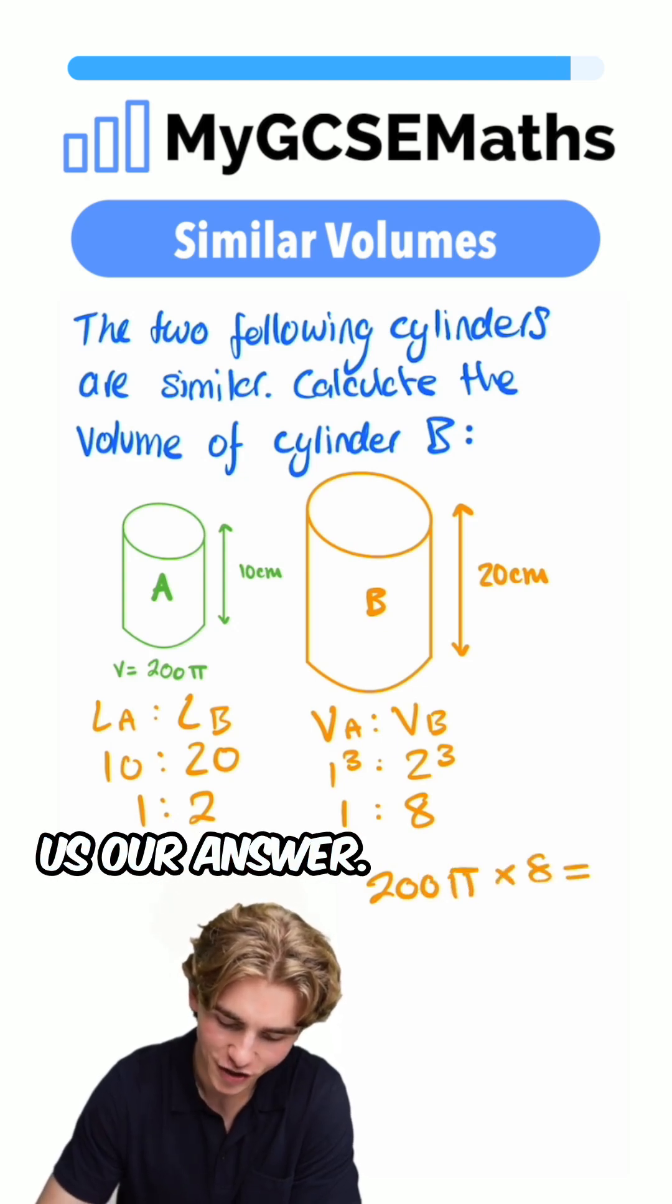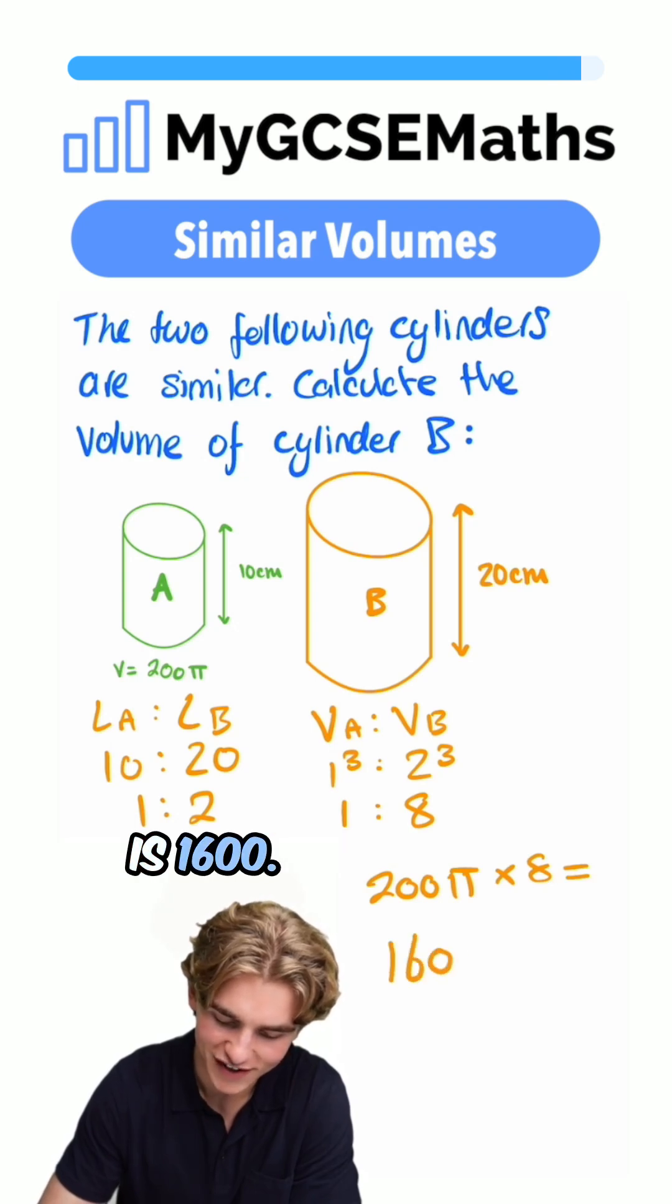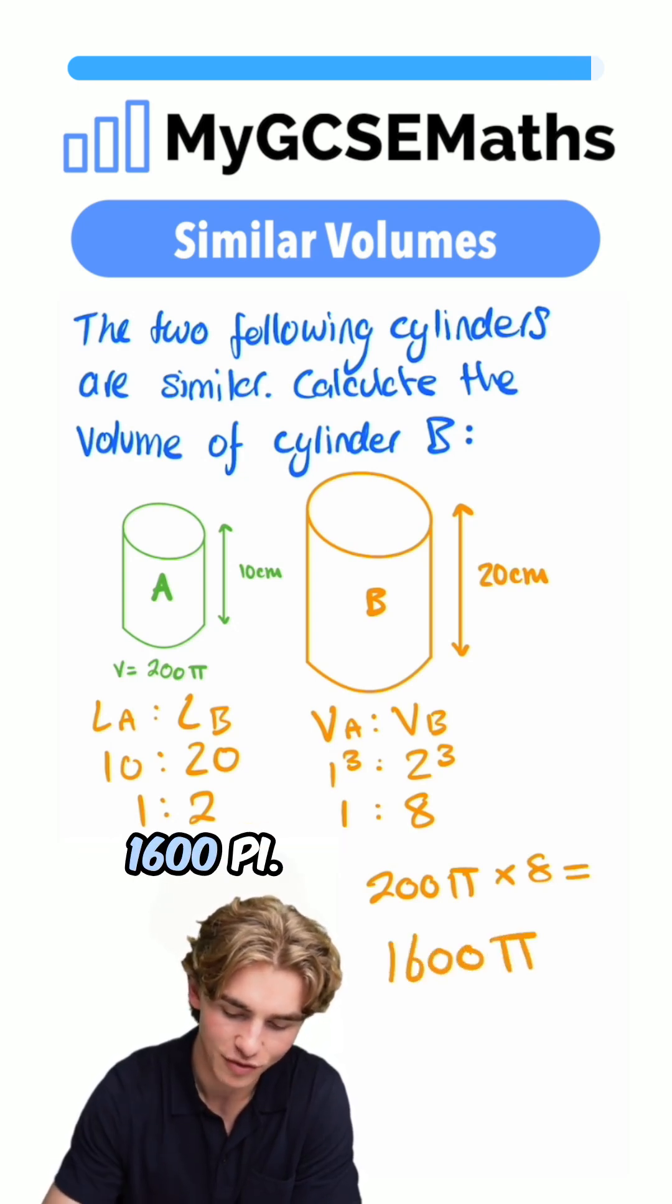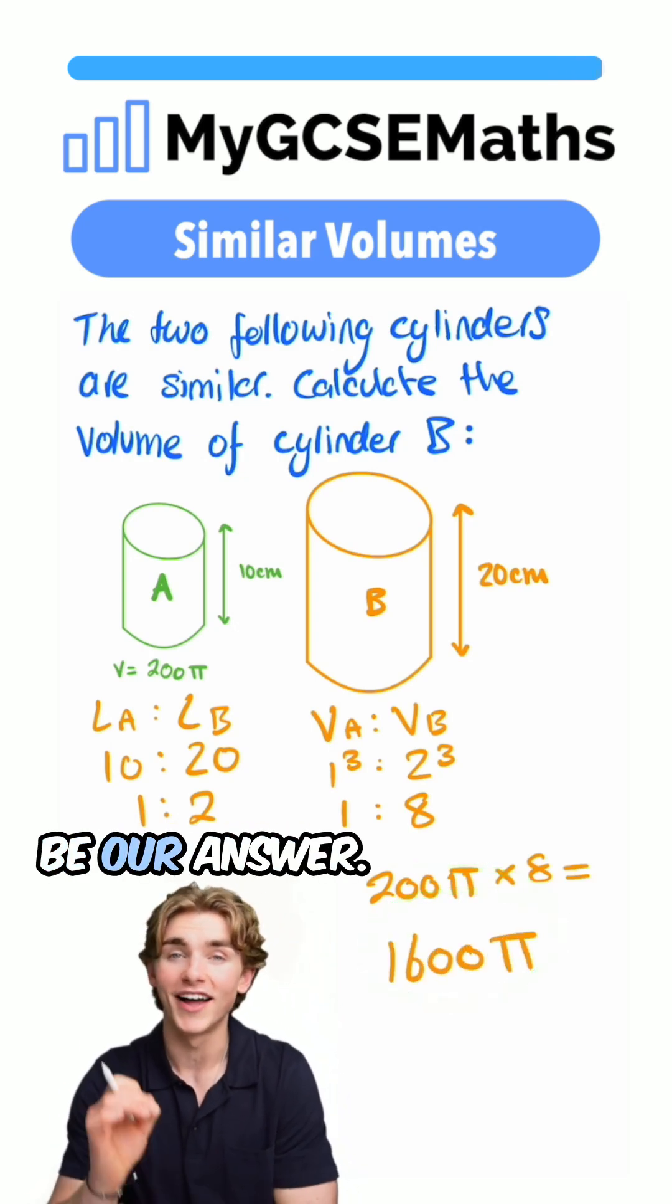That, guys, is going to give us our answer. 200 by 8 is 1,600. So we have 1,600π. That is going to be our answer.